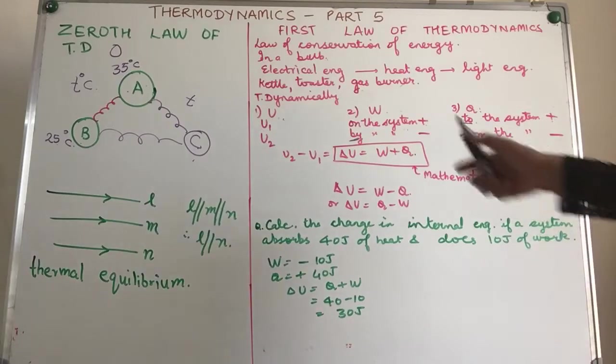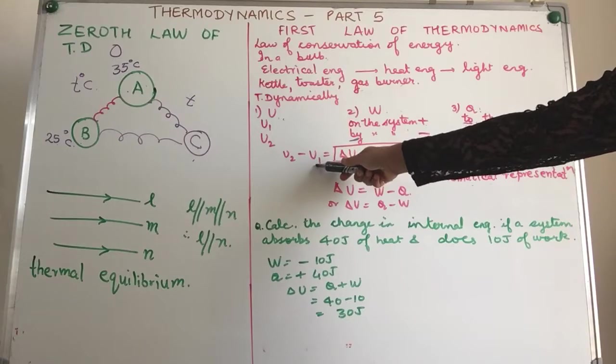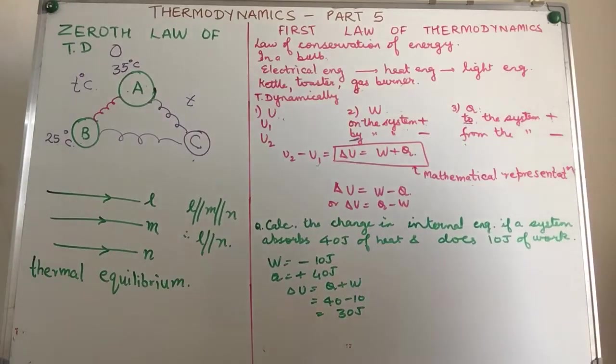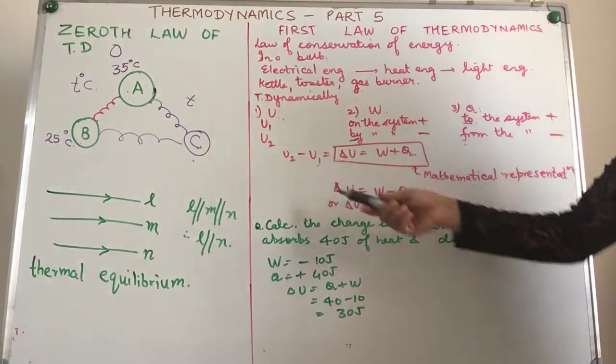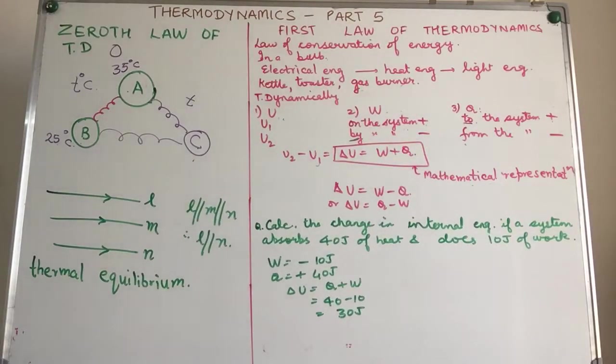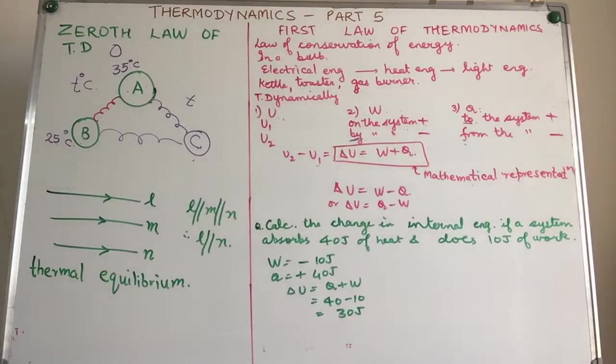We know very well that internal energy is a state function, it's not a path function. So if we have internal energy, the initial internal energy denoted by U1 and the final internal energy denoted by U2, the difference of the two is given as U2 minus U1. That is delta U, the change in internal energy.